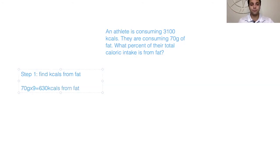So this is 630 kcals from fat. Now step two, we have to figure out what percent of 630 is into 3100. So we're going to have to divide. In reality we would divide, if we had a calculator, 630 divided by 3100, we would get a decimal, multiply it by 100 and that would give us our percentage. But we don't have a calculator so we're going to make things a little bit easier for ourselves.